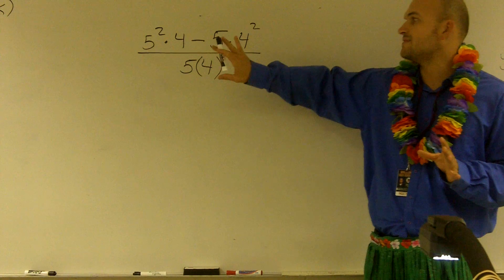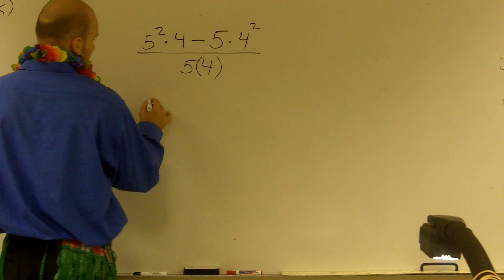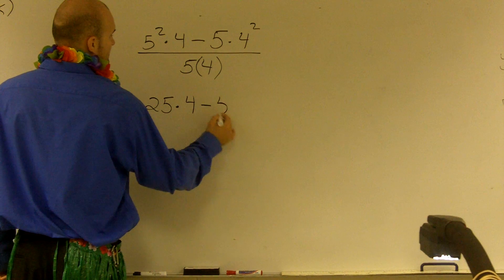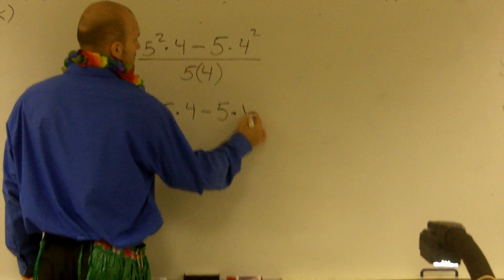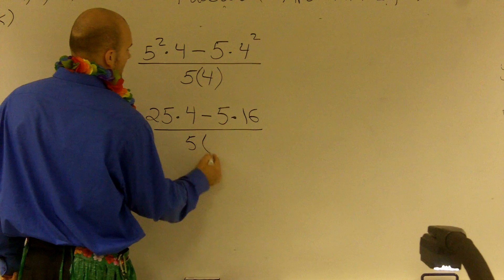I'm going to evaluate all my exponents for this problem. So 5 squared leaves me 25 times 4 minus 5 times 16, all over 5 times 4.